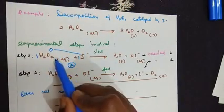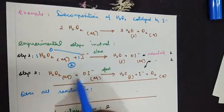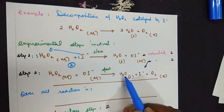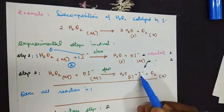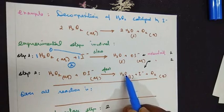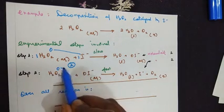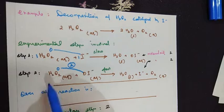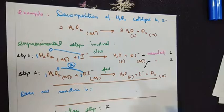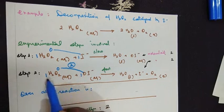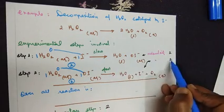In step 2, the second mole of hydrogen peroxide reacts with the OI⁻ anion created in step 1 to give one more mole of water. The catalyst iodide comes out unchanged and oxygen is released — the two oxygen atoms combine to form O₂. For this step, 1 mole of H₂O₂ reacts with 1 mole of OI⁻ anion; molecularity is calculated only in terms of reactants, so there are 2 reactants. Hence molecularity is 2 for step 2 as well.